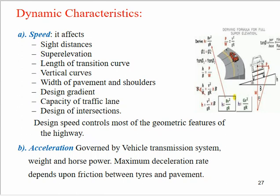Next is acceleration, which is governed by the vehicle transmission system, the weight and horsepower — that is the total capacity of the engine of the vehicle to generate power. The maximum deceleration rate depends upon the friction between the tires and the pavement.